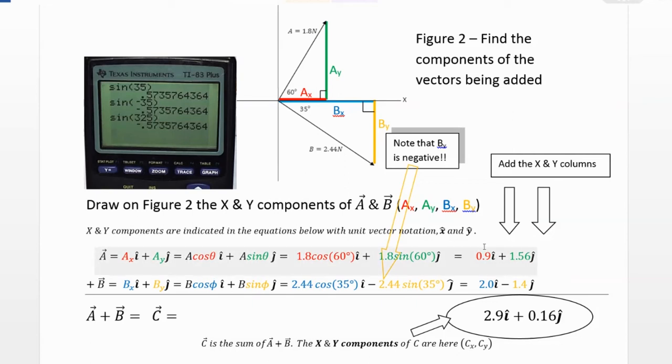Okay, so once you've got the x and y components of A and B, we're going to add up the x column to get my total sum in the x direction. And we're going to add up the y column to get my total sum in the y direction. And now these are the x and y components of the sum of A plus B, which we will call C.